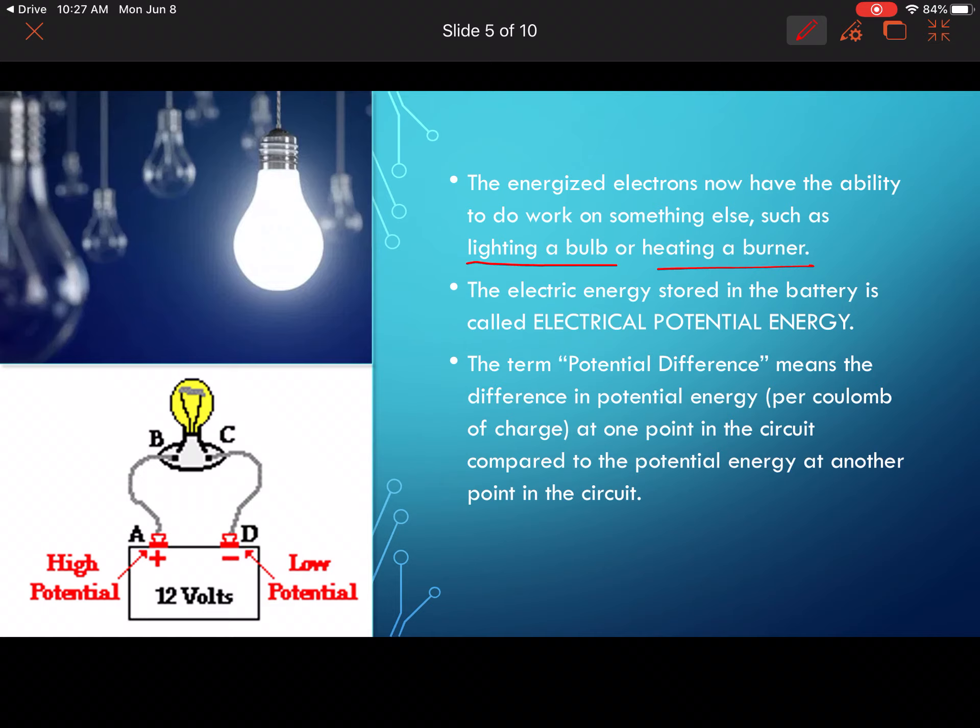When they do work, that's how we would see electricity. This would be such as lighting a bulb or heating a burner. So whenever that happens, that's the electrons doing work on something. The electrical energy stored in a battery is called electrical potential energy. So you can copy that down there: electrical potential energy.